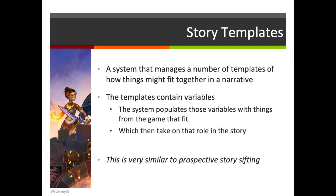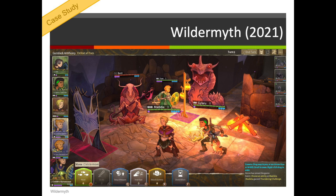A story template is a system that has a number of templates of how things might fit together to form a narrative. The template contains variables, and the system populates those variables with things that it sees in the game space, which then take on that role in the story. This is very similar to prospective story sifting, except instead of pushing the story in a direction or making a pattern more likely to complete, this imposes the template on the game, meaning that the things within the game take on the roles of that story and enact them out.